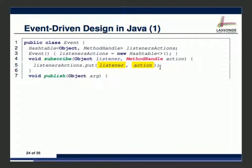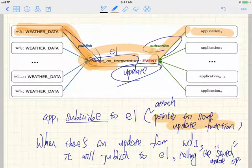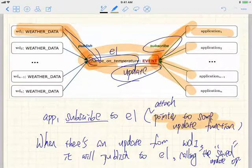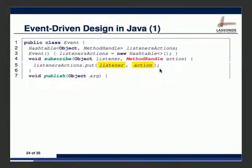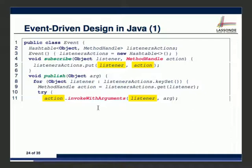Let's see the weather data class. Weather data is the subject side. We have temperature, humidity, and pressure. Critically, on the subject side we no longer maintain a list of observers — the observers are maintained on the events, not on the subject. We declare three events: change_on_temperature, change_on_pressure, and change_on_humidity. If temperature changes, we only publish to the temperature event, not the other two. So we declare three events as static — shared by all instances.